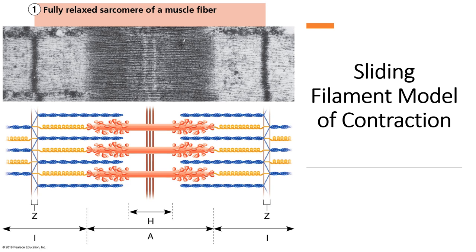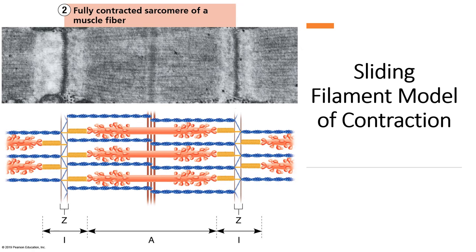If we look at a fully relaxed sarcomere, we can see different zones and overlap areas. When we compare that to a fully contracted sarcomere, many things have changed: the A zone has shortened, the Z lines are brought closer to the M line, and everything has contracted.